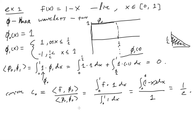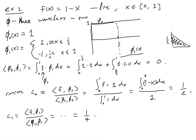So c₀ equals one half. The second coefficient c₁ is the inner product of f with φ₁, divided by the inner product of φ₁ with φ₁. This one is a little more tricky; I'll spare the steps and just note that you get an answer of one quarter. It just takes breaking things into pieces and integrating fairly simple functions.